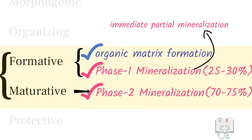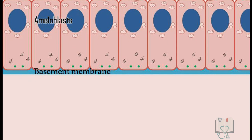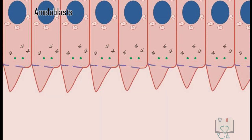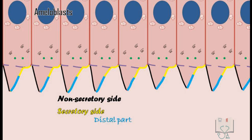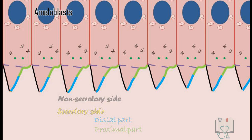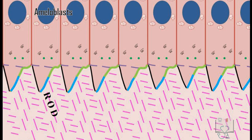In the first phase of mineralization, which occurs during the formative stage, the ameloblasts have Tomes' processes which have a non-secreting side and a secreting side. The secreting side has two parts: a distal part and a proximal part. From the distal part, hydroxyapatite crystals are released parallel to the long axis of the enamel rods, whereas from the proximal part, hydroxyapatite crystals are released at 65 degrees to the long axis to form the interrod enamel.